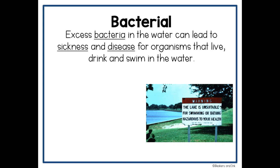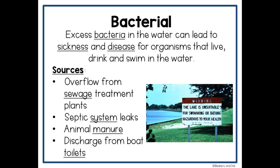Bacterial pollution is our third type. Excess bacteria in the water can lead to sickness and disease for organisms that live, drink, and swim in the water. You may have seen signs saying a lake is not good for swimming due to high amounts of E. coli at certain times of year. Sources include overflow from a sewage treatment plant — perhaps from too many houses or very heavy rains — septic systems that aren't properly maintained and leak bacterial pollution into the groundwater, animal manure from pets or large farms that don't properly manage waste, cows getting into rivers, and discharge from boat toilets.